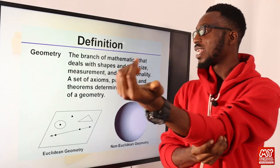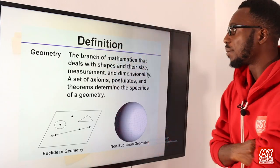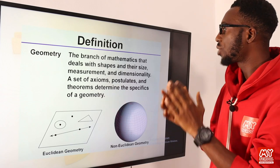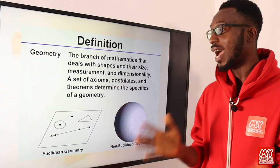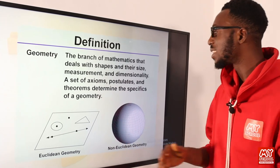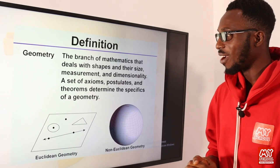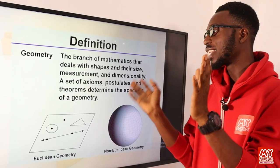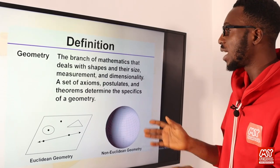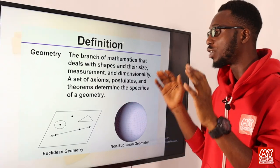We have another angle to this concept. Geometry is the branch of mathematics that deals with shapes and their sizes, measurements, and dimensionalities. A set of axioms, postulates, and theorems determine the specifics of a geometry.